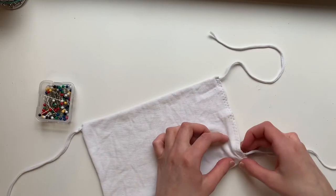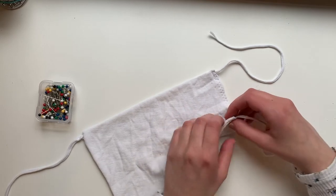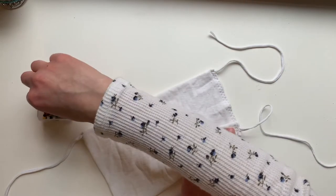When that's sewn, fold pleats into the mask's sides. You should have 3 pleats on each side. Make sure they're evenly spaced and all the same size.